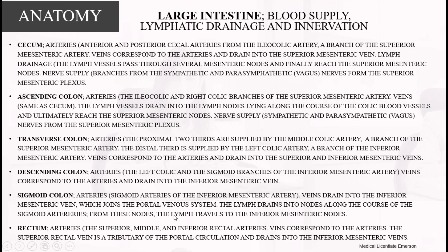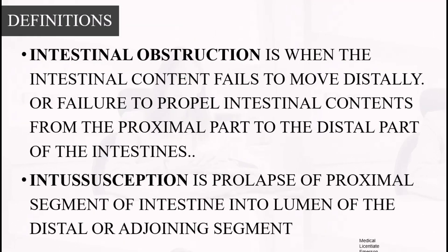Lymph from the sigmoid colon travels to the inferior mesenteric nodes. The rectum is supplied by the superior, middle, and inferior rectal arteries. The superior rectal vein is a tributary of the portal circulation and drains into the inferior mesenteric vein. This anatomy section is where most examination questions on intestinal obstruction arise, so it is important to know these details well.